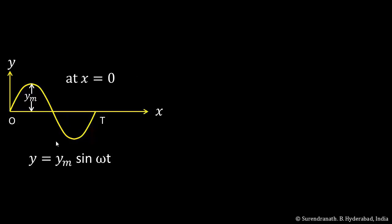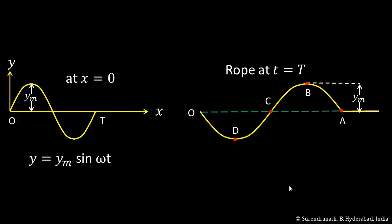The graph shows the oscillations at the left end of the rope. The equation for the oscillations is y = ym sin(ωt). At the end of one oscillation of the left end, the shape of the rope is as shown. A has just received vibration. C has received the vibration at T/2 and has been oscillating for T/2. B has received the vibration at 3T/4 and has been oscillating for T/4. D has received the oscillation at T/4 and has been oscillating for 3T/4. You can see a left-right reversal of the shape as the farther particles begin vibrating later.